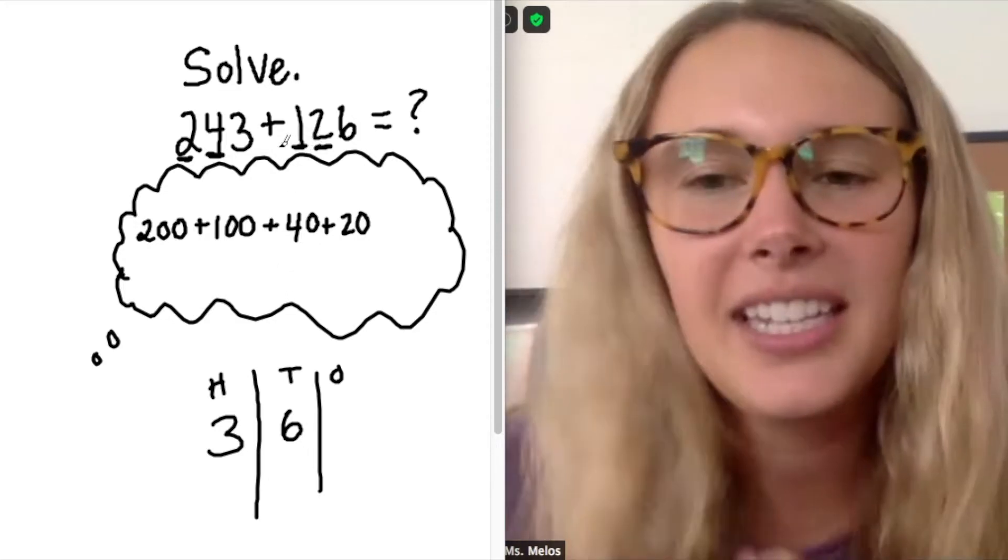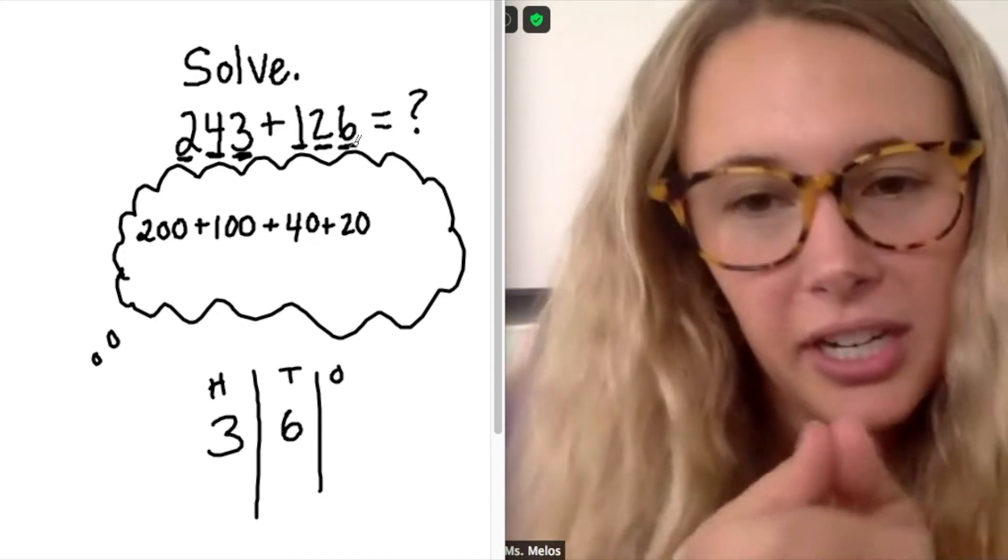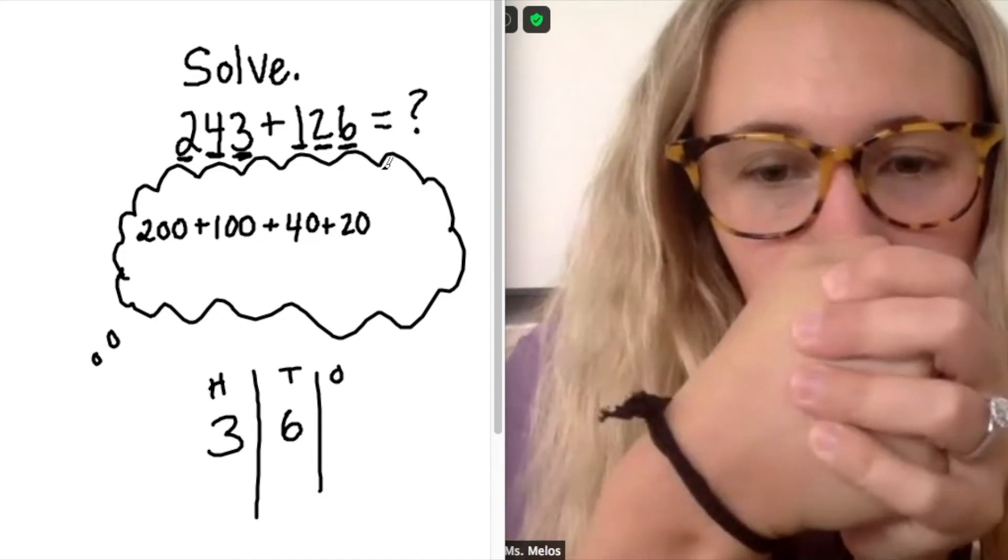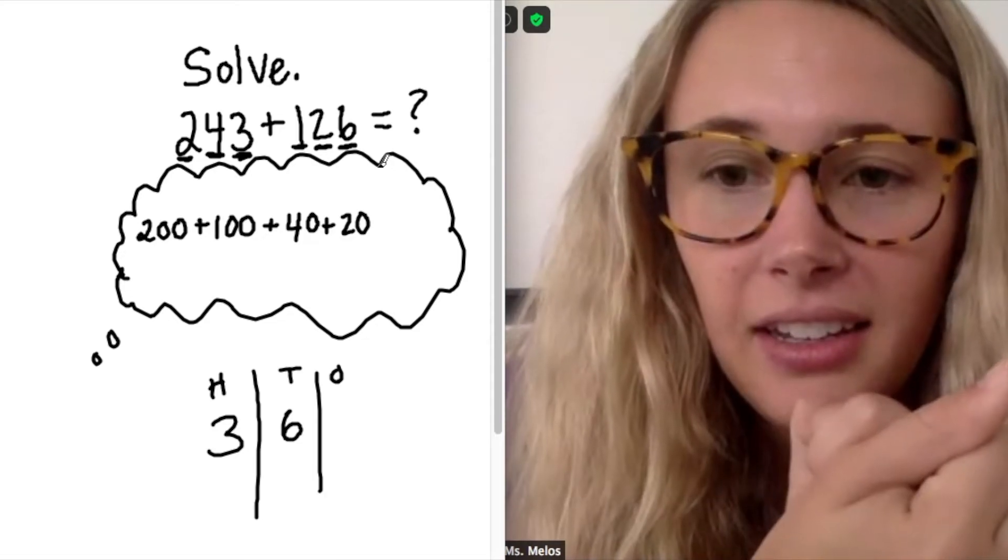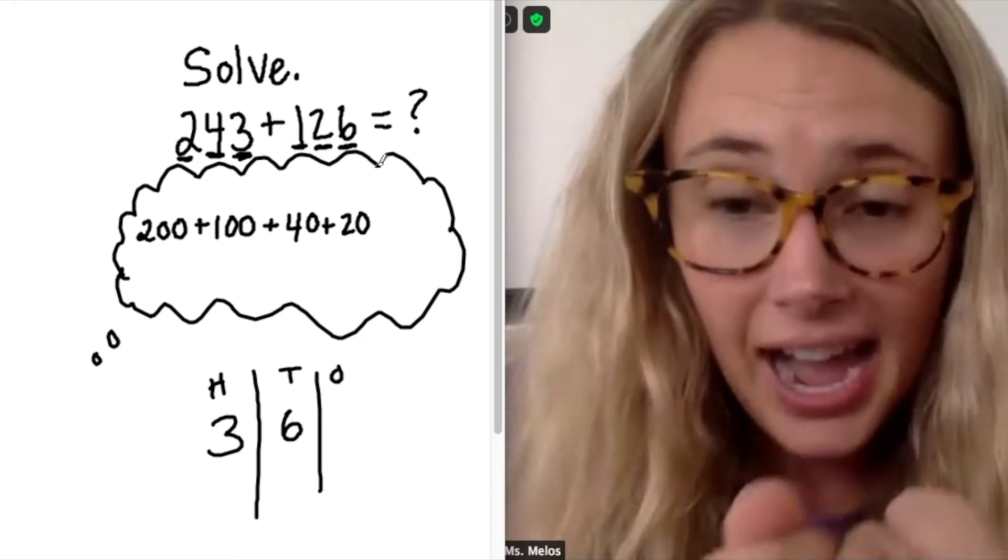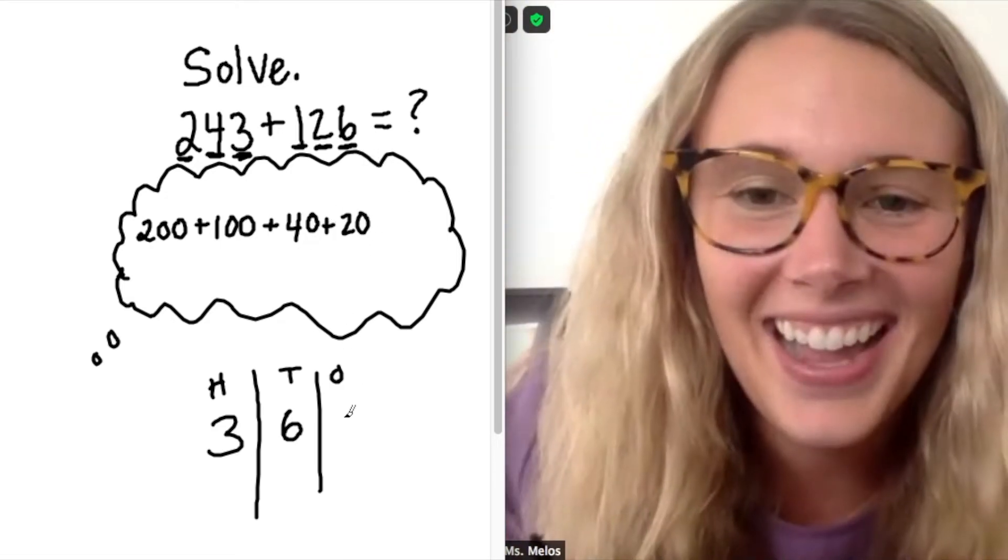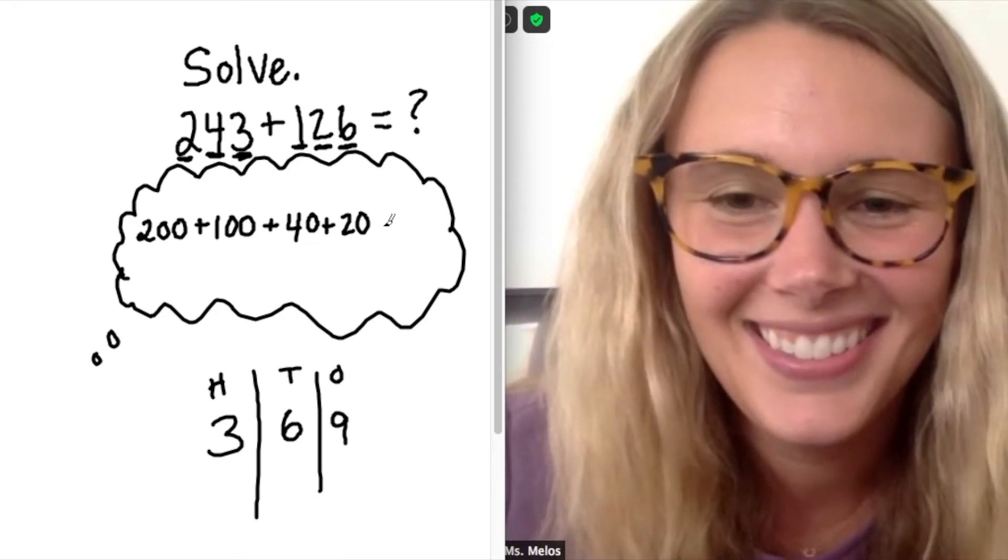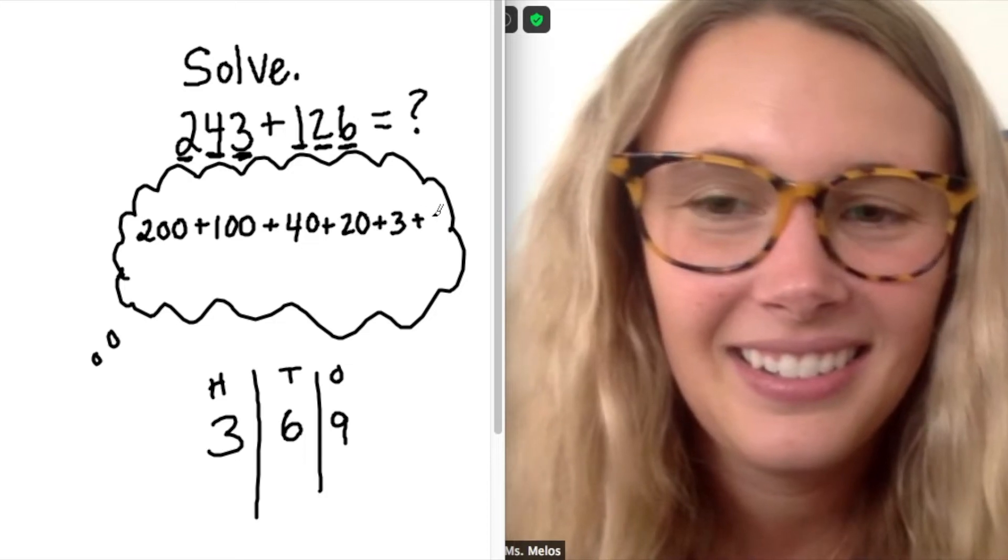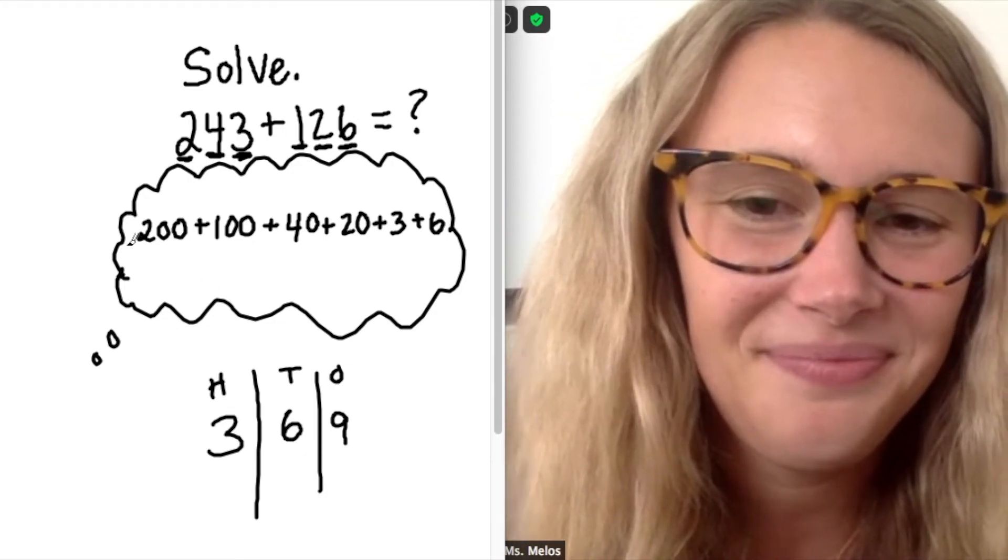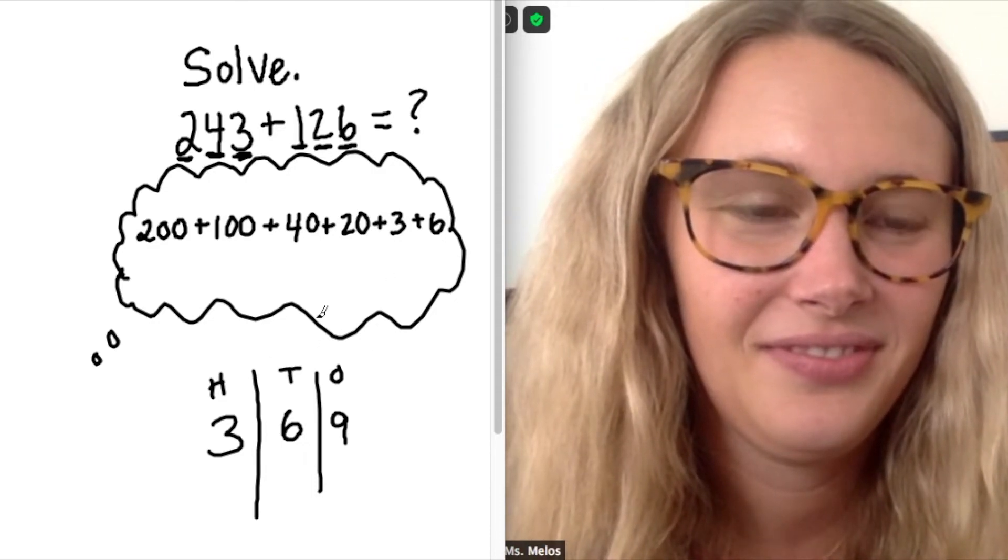All right. So then the last thing is my 1s place. Easy peasy. I have a 3 and a 6. So I'm going to press 3 and count up 6. 3, 4, 5, 6, 7, 8, 9. So I have 9 1s. So I can put a 9 in my 1s place. Awesome. And that was like you were adding 3 plus 6. It's like the thinking in your head looks really scrambled, but you just did 369.